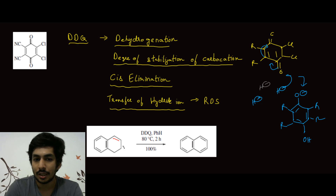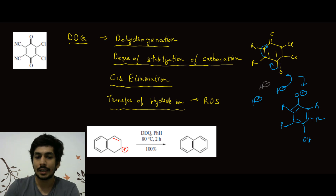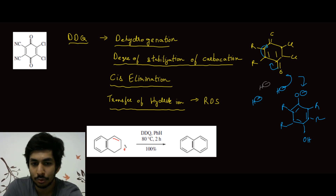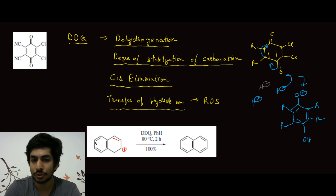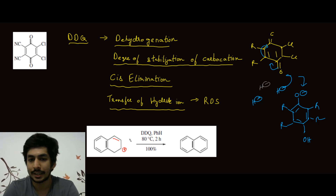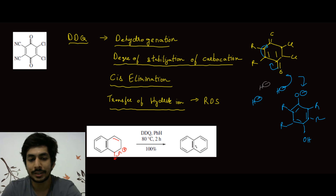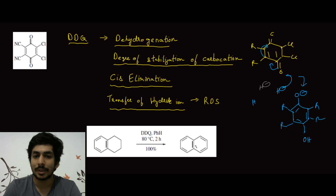When excess DDQ is added, again a hydride transfer takes place. An allylic carbocation is generated, but this carbocation is actually more stable because it is in higher conjugation — this double bond migrates over here and we get a carbocation in long conjugation. So this is a more stable carbocation. Then again a hydride transfer takes place, O minus extracts the next hydrogen, the bond migrates, and aromatization takes place. You can see this aromatization is related to dehydrogenation.